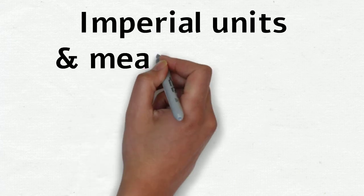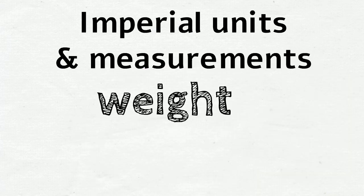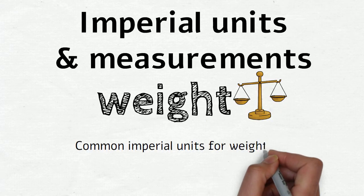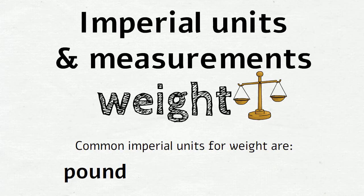Let's move on to the imperial units and measurements for weight. The common imperial units for weight are pounds, stones and ounces. We'll start with ounces.